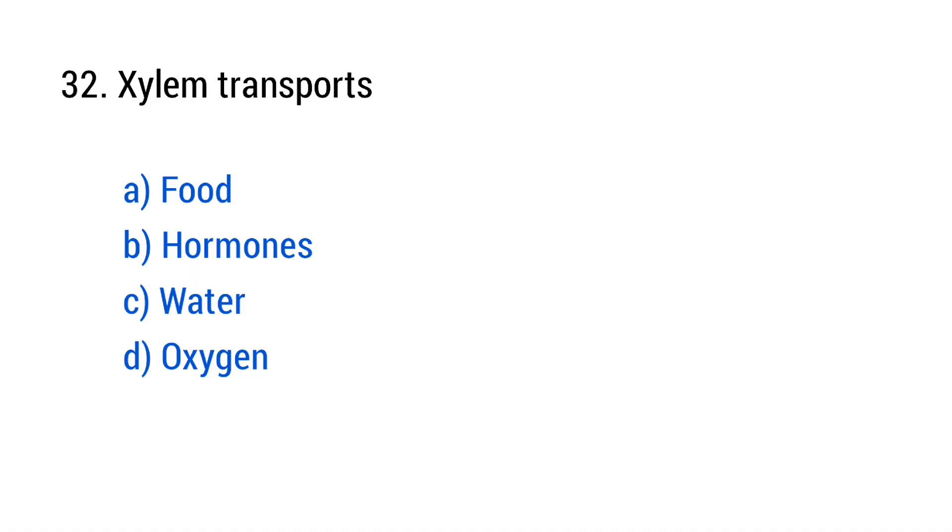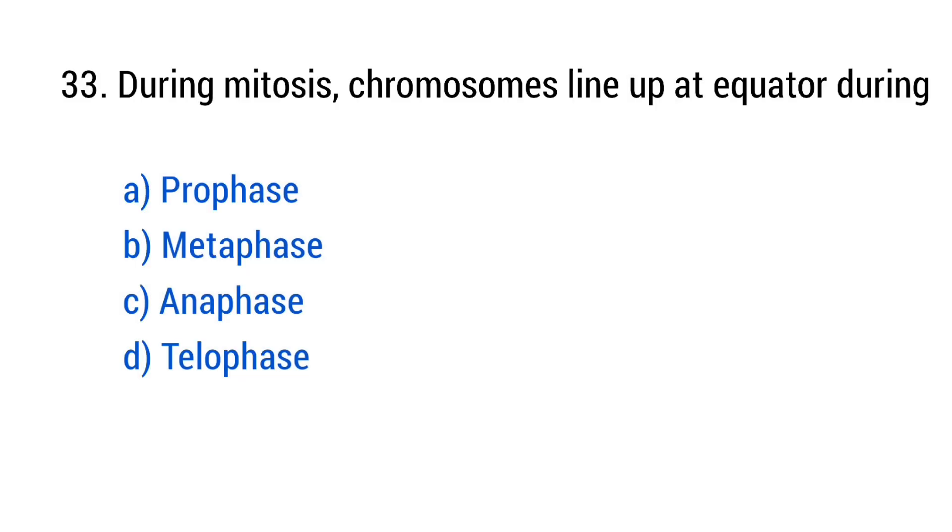Question number 27. Red color of RBCs is due to? The right answer is option B, hemoglobin. Question number 28. Organ of Corti is found in? The right answer is option A, ear. Question number 29. Antigen presenting cells include? The right answer is B cells and macrophages.